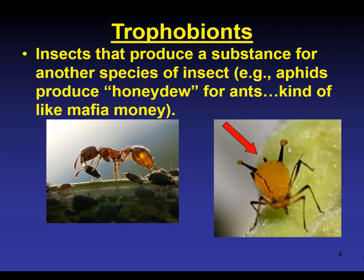We've got some new vocabulary here. Trophobionts — 'troph' means energy, and 'biont' comes from symbiont or symbiotic relationships where different species live and interact with each other. One thing you may be familiar with is that ants farm aphids. It's not just that they are being kind to the aphids — the aphids are essentially functioning like parasites on a plant, with their beak stabbed in, drinking essentially the plant's blood.